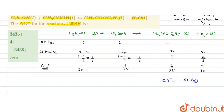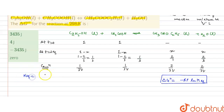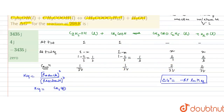We have to find ΔG°, and it is calculated as: ΔG° = −RT ln Kc. So if we find out the equilibrium constant, we can find the standard free energy change. Kc equals the concentration of products raised to their stoichiometric coefficients divided by the concentration of reactants raised to their stoichiometric coefficients.